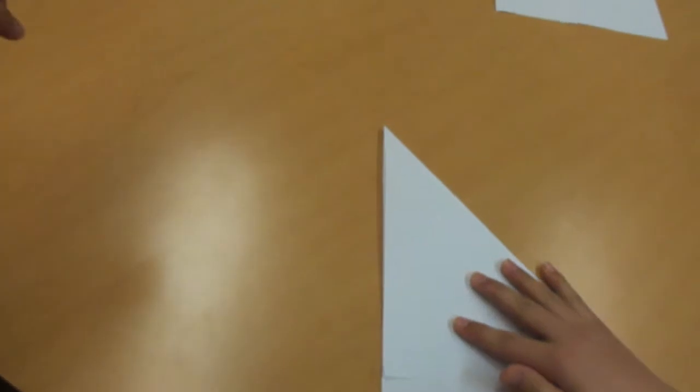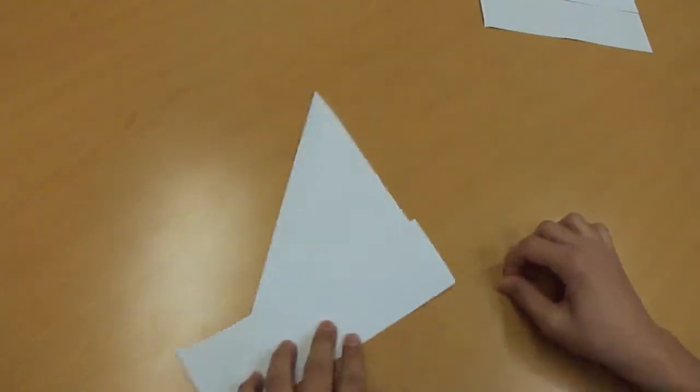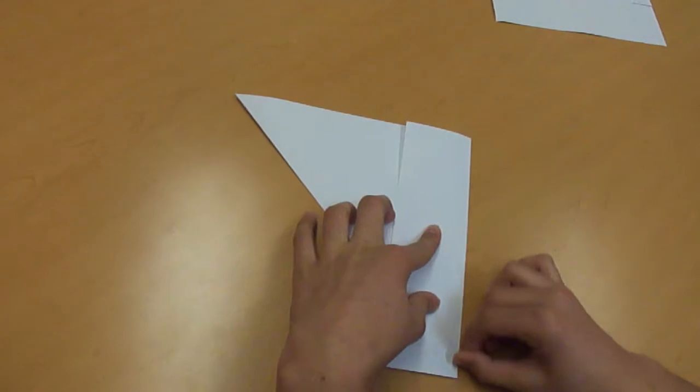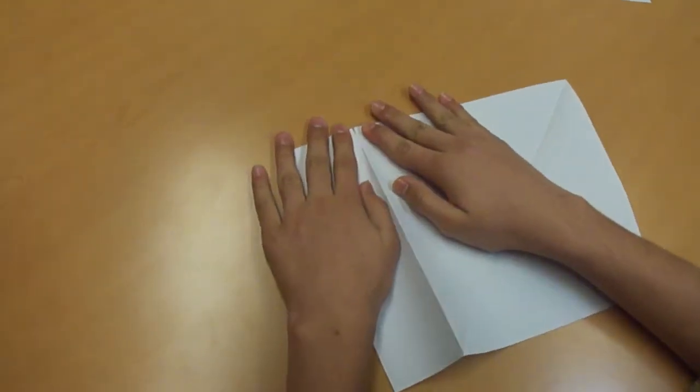So you turn this paper over, like first fold, you do this. Take it out, turn it upside down, make a good crease so you'll be able to cut it. Then you cut the bottom part.